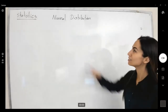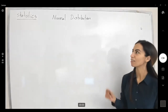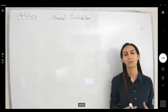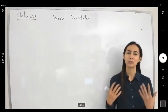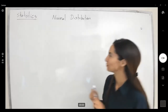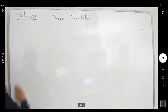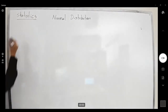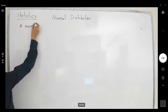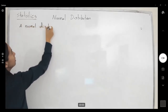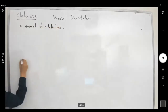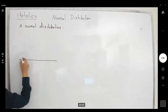We need to officially introduce a normal distribution and learn how to convert x values into z values when we have confidential data. The normal distribution, as we saw before, has a bell-shaped graph.